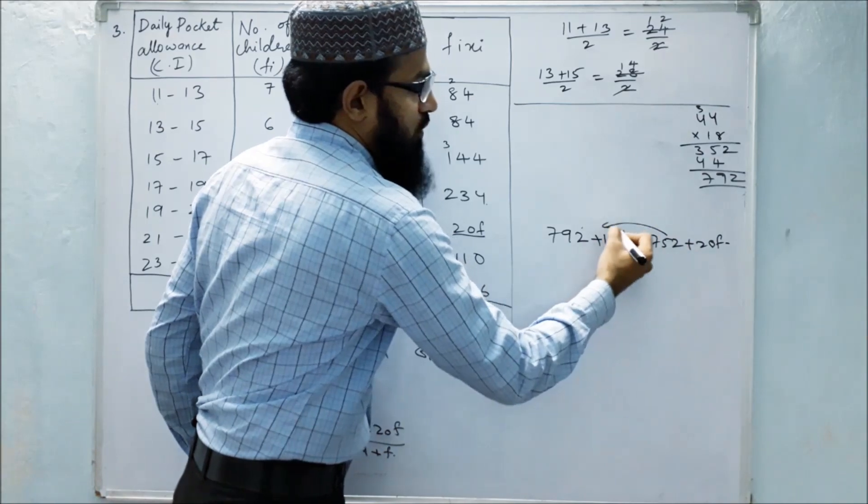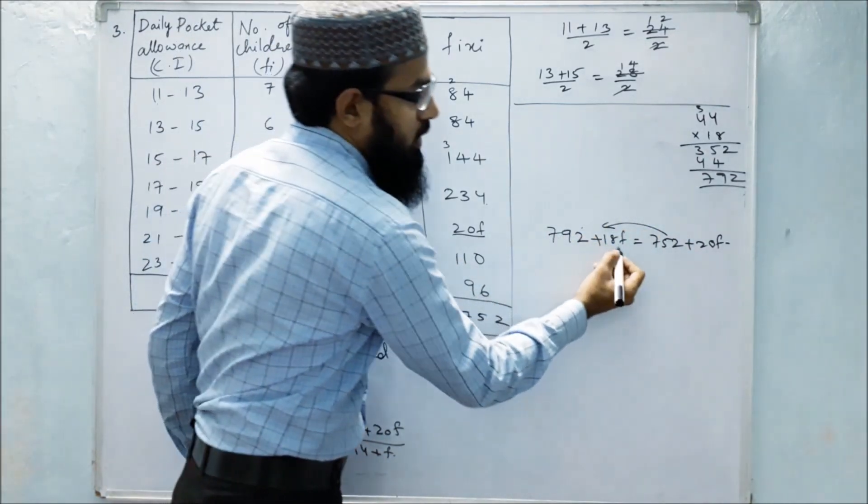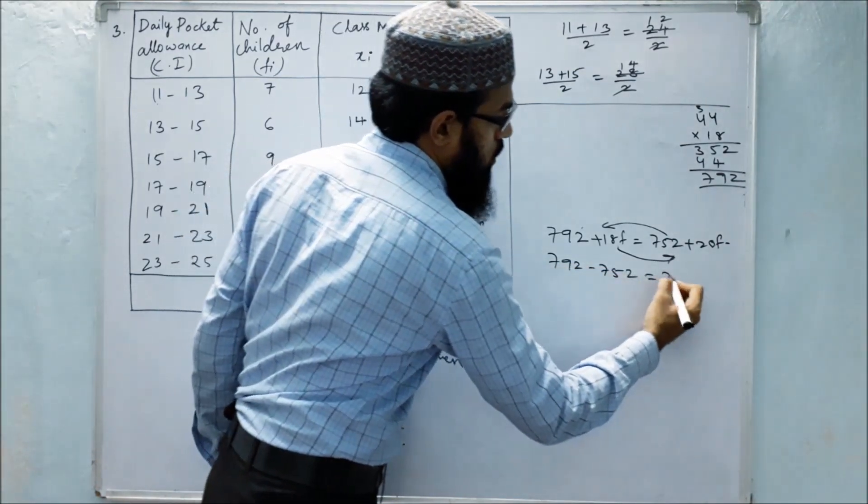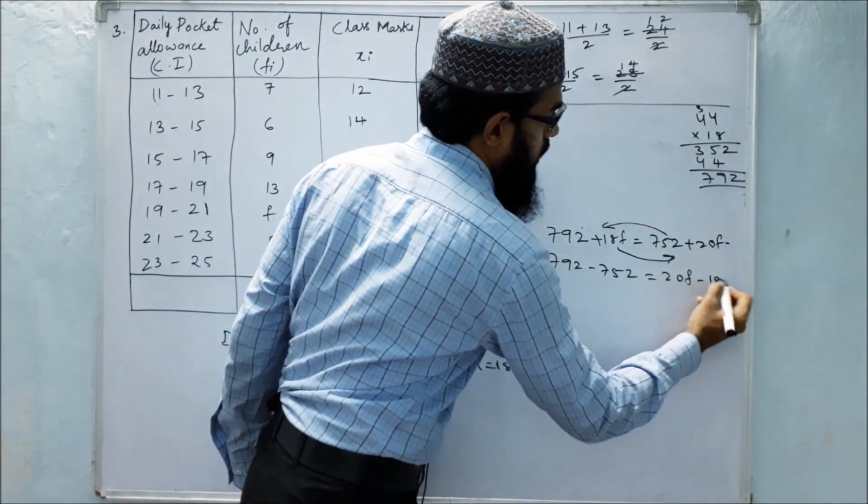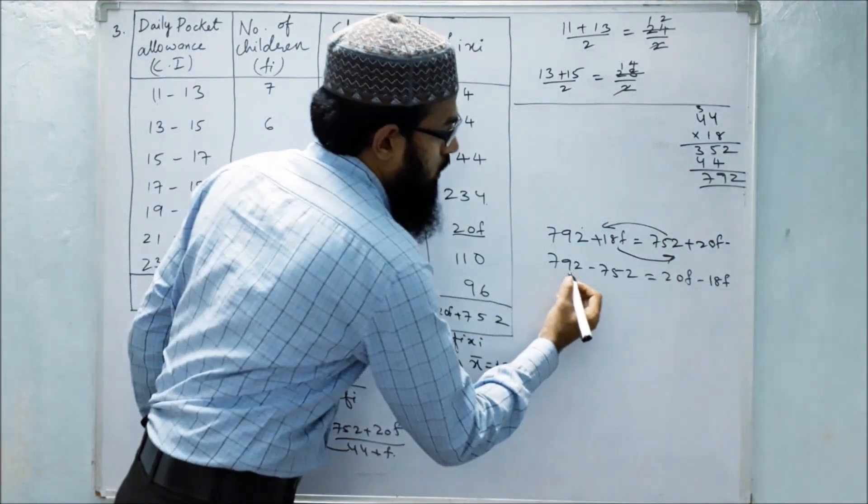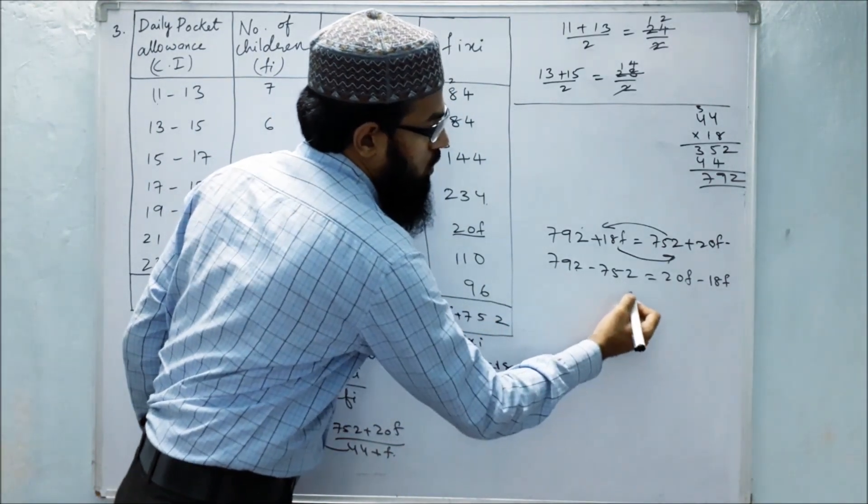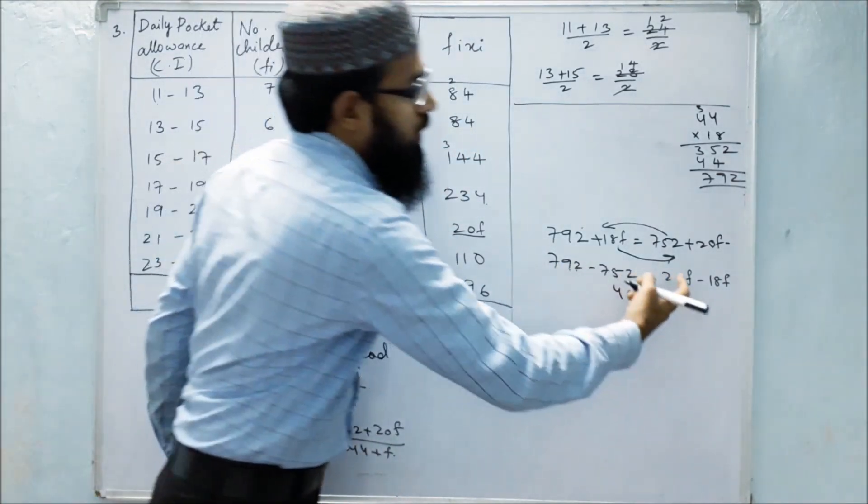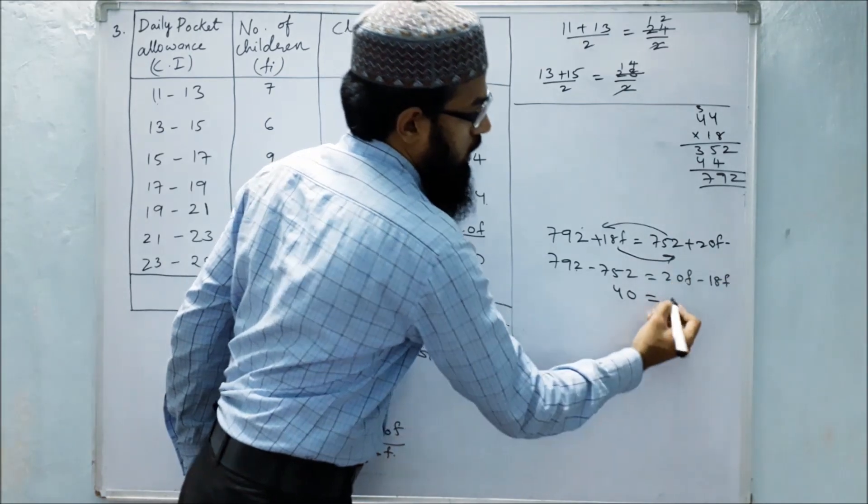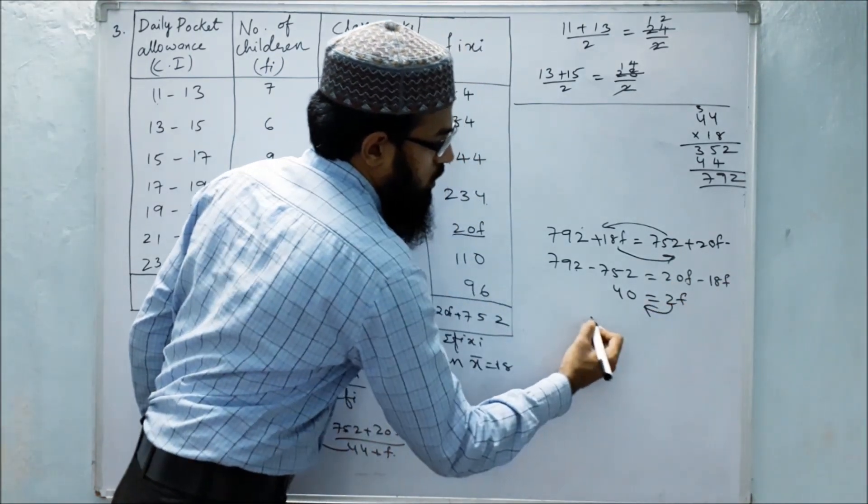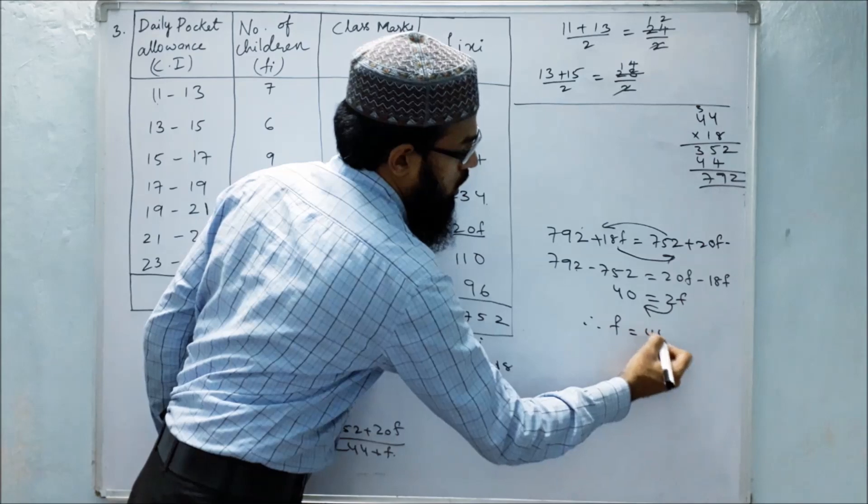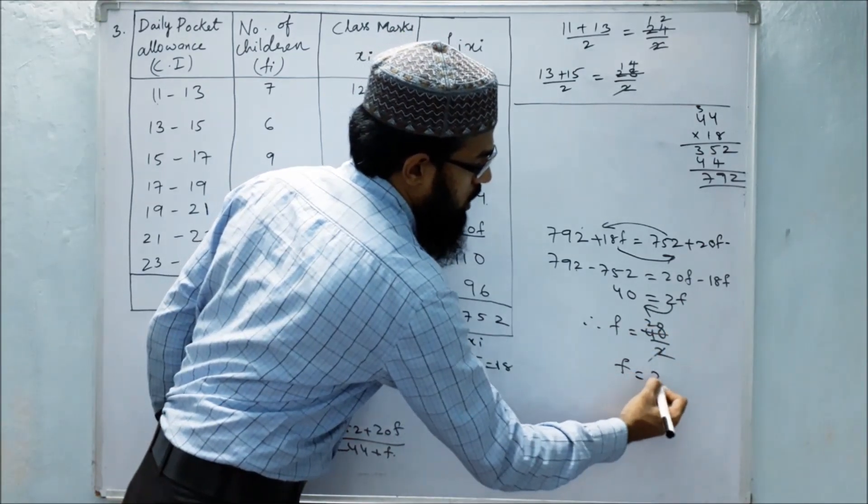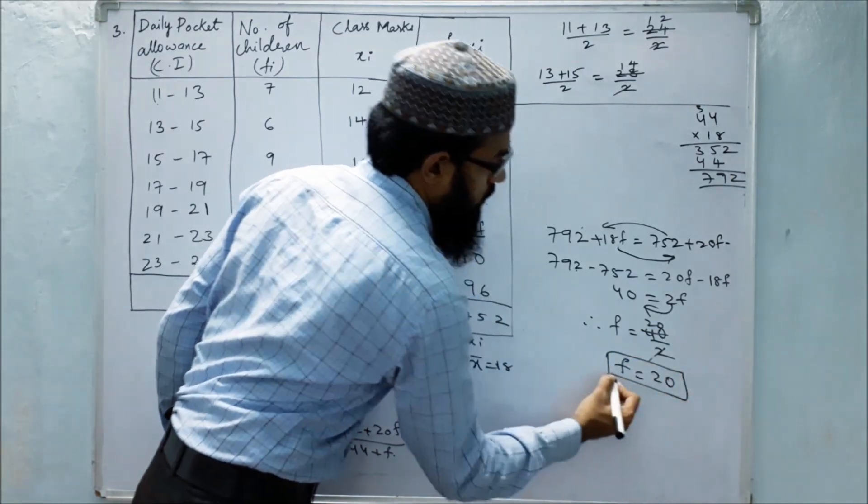Bring 752 to this side and send 18f to that side. So 792 minus 752 equals 20f minus 18f. That is 40 equals 2f. Therefore f equals 40 by 2, which is 20. The missing frequency value is 20.